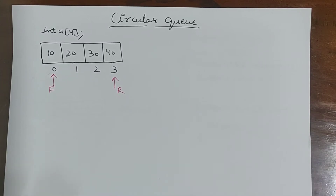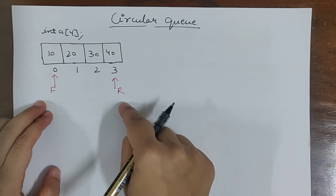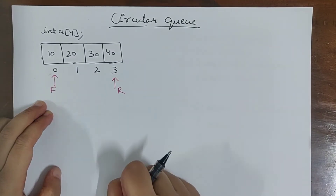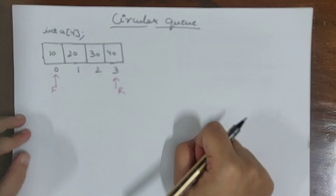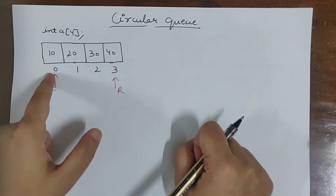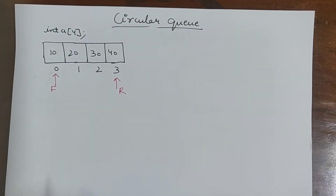Hello everyone. Next topic is circular queue. In my previous video I already discussed the limitation of classical queue — I won't be able to insert data even if there is space. To overcome this problem, we introduce circular queue. Let's repeat the problem: the condition is front is 0 and rear is 3, meaning rear is pointing to n minus 1. If I want to insert new data, I won't be able to because there is no space — front is at 0, meaning there has been no deletion yet.